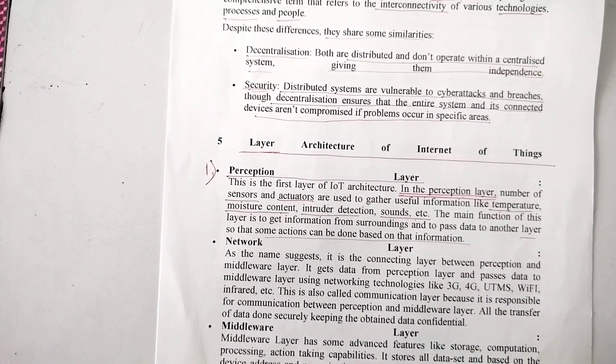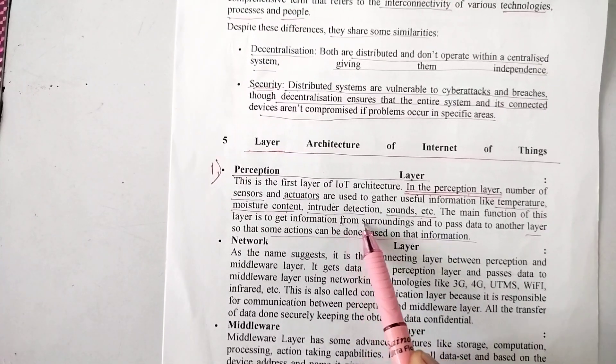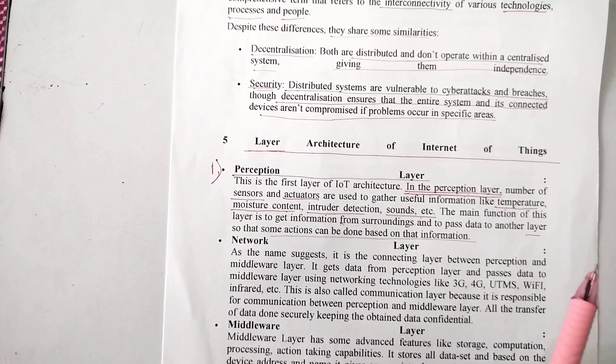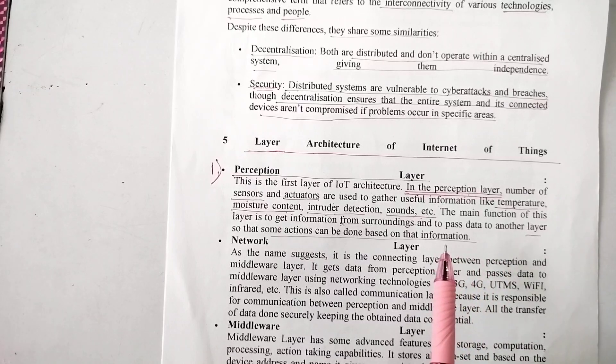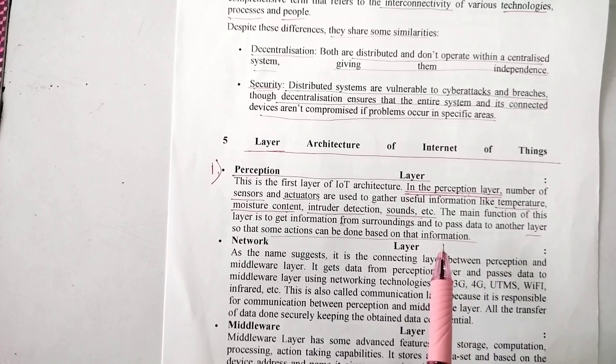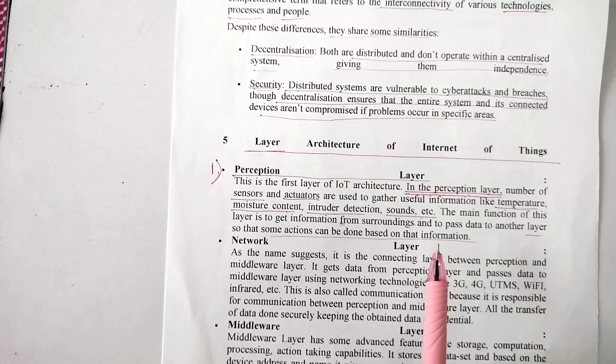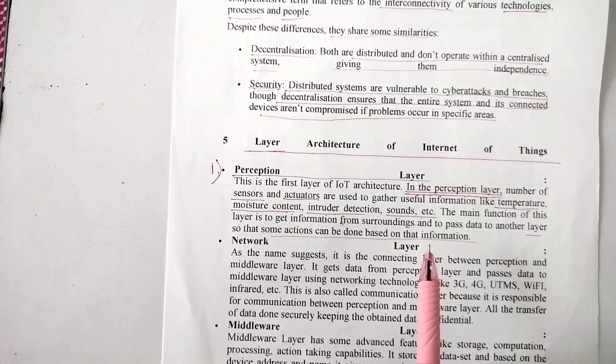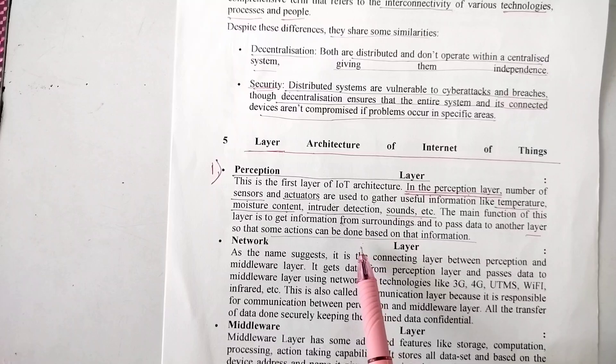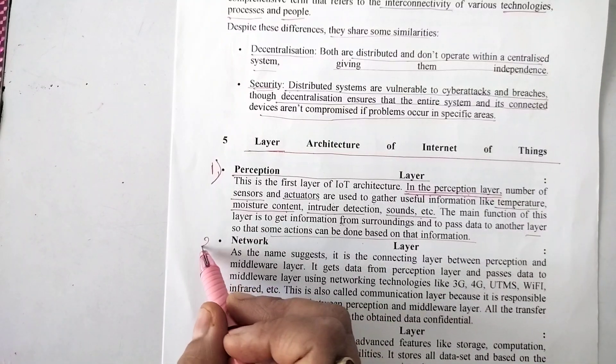The sole task of the perception layer is to get information from the surroundings where sensors are placed, and then pass that information to another layer which can take actions based on that input data. The second layer is the network layer in the IoT.